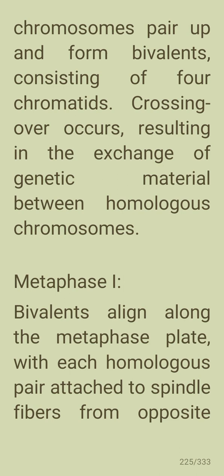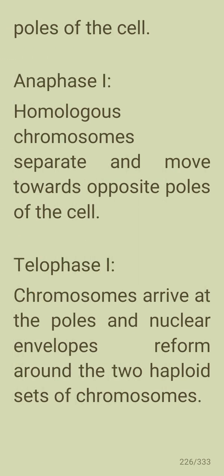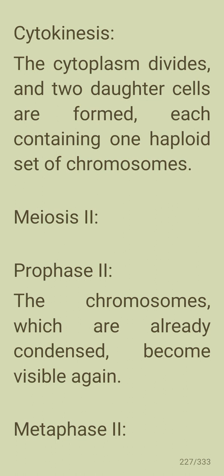In metaphase one, bivalents align along the metaphase plate with each homologous pair attached to spindle fibers from opposite poles. In anaphase one, homologous chromosomes separate and move towards opposite poles. In telophase one, chromosomes arrive at the poles and nuclear envelopes reform around the two haploid sets of chromosomes. Cytokinesis then divides the cytoplasm, forming two daughter cells each containing one haploid set of chromosomes.